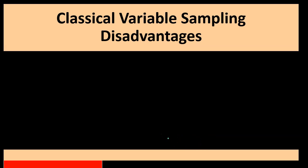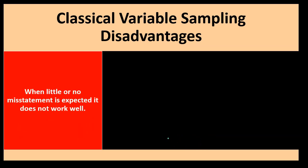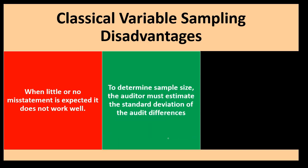Classical variable sampling has some disadvantages. When little or no misstatement is expected, it does not work well. If we're going to have little to no misstatement, this design isn't going to work well for us.